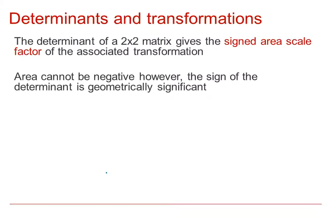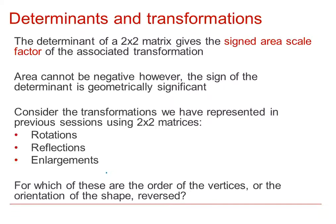The determinant of a 2×2 matrix gives the signed area scale factor of the associated transformation. The determinant may be positive or negative, but it tells you the area scale factor. Area cannot be negative, however, so the sign of the determinant has geometrical significance. For the transformations represented by 2×2 matrices — rotations, reflections, and enlargements — for which of these is the orientation of the shape reversed?